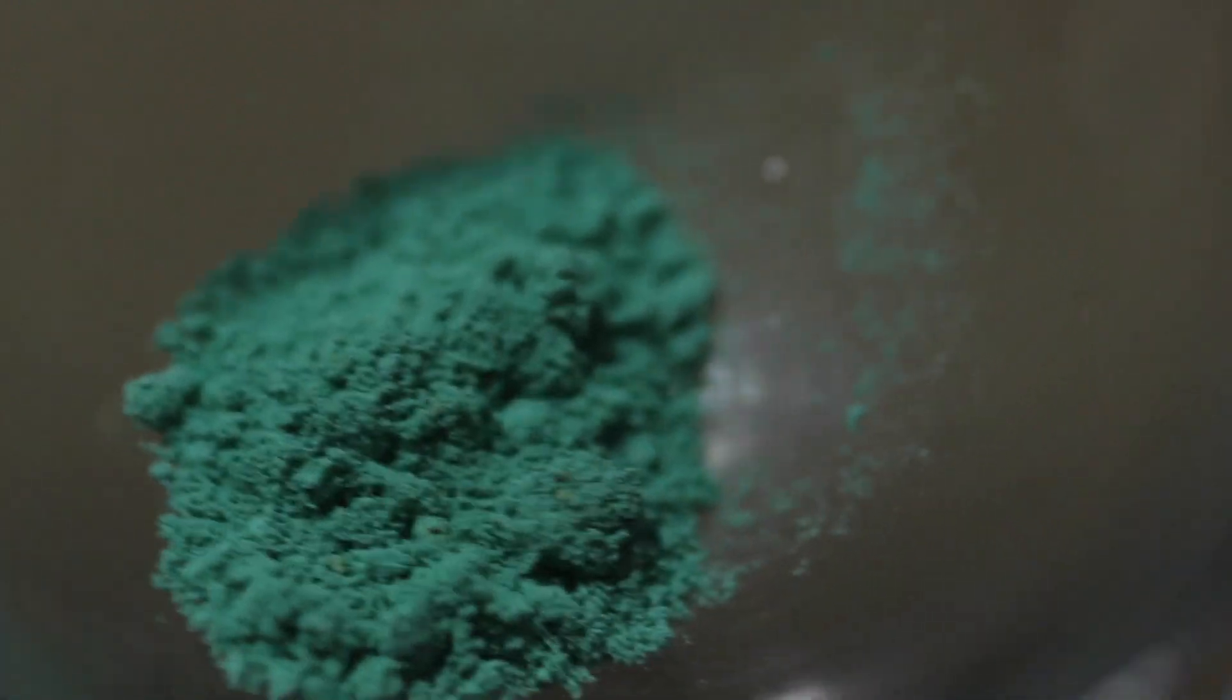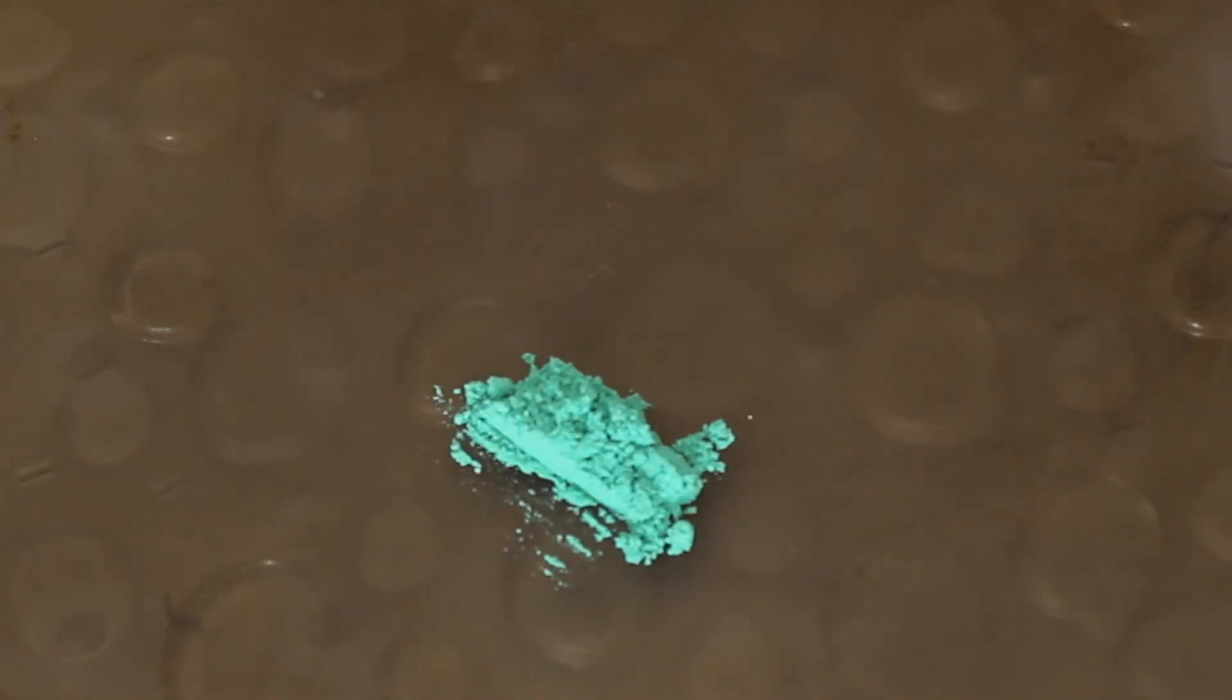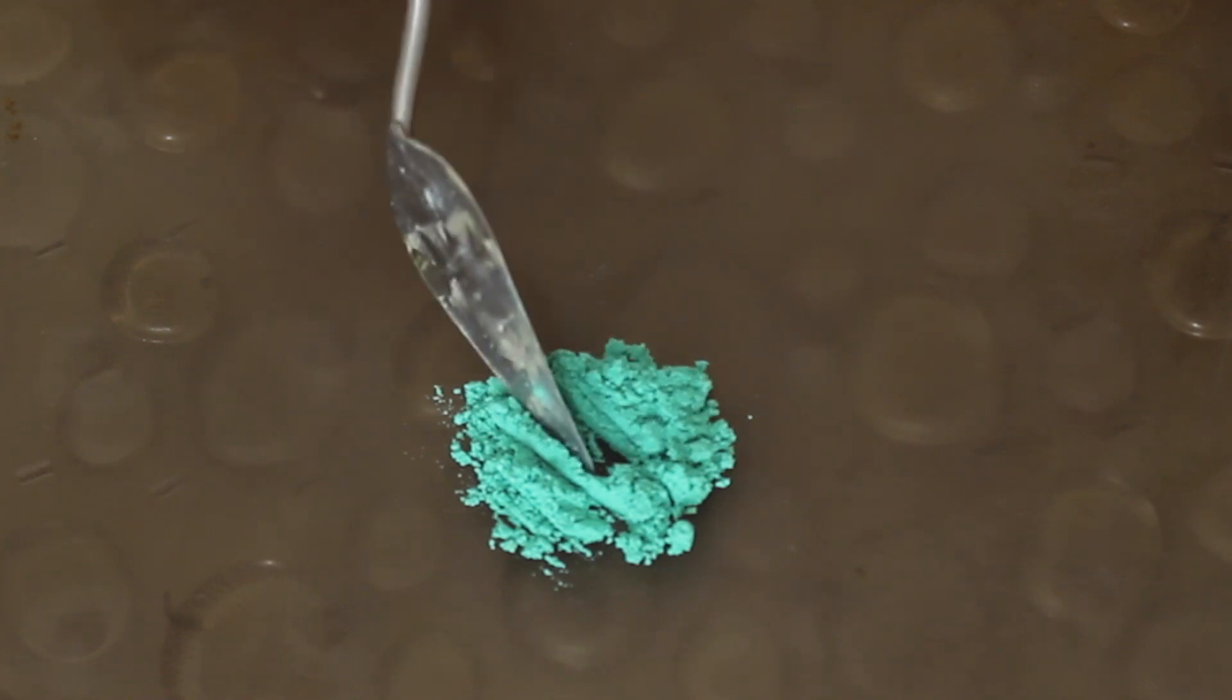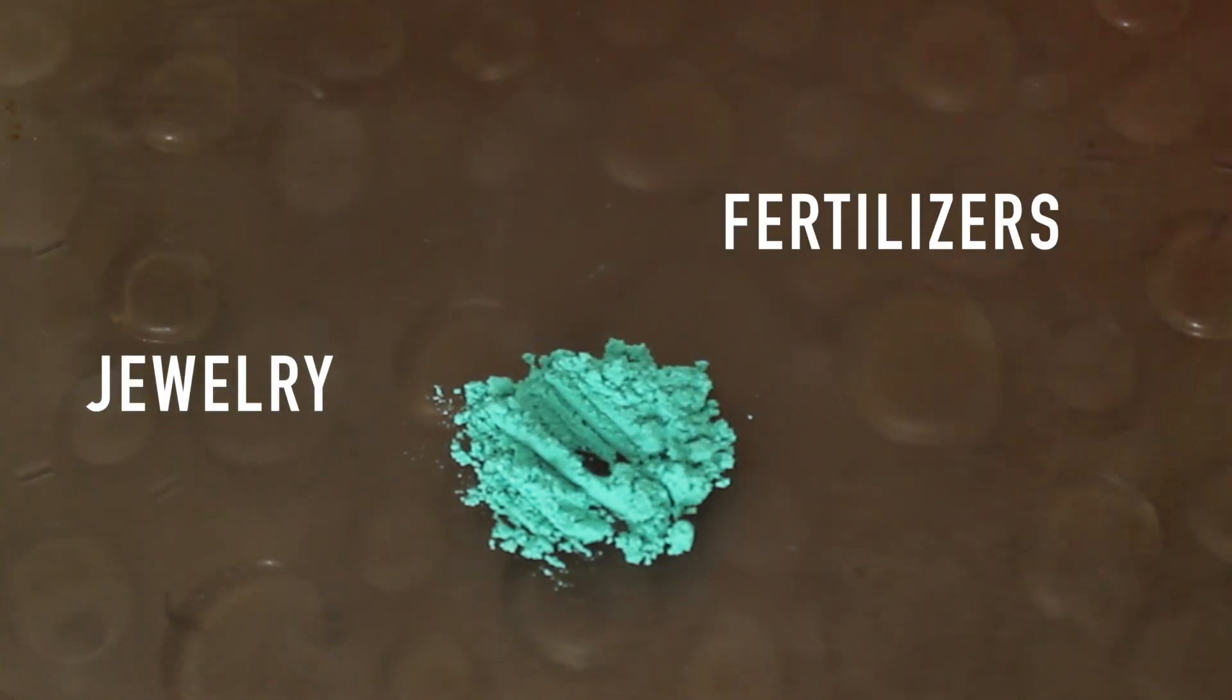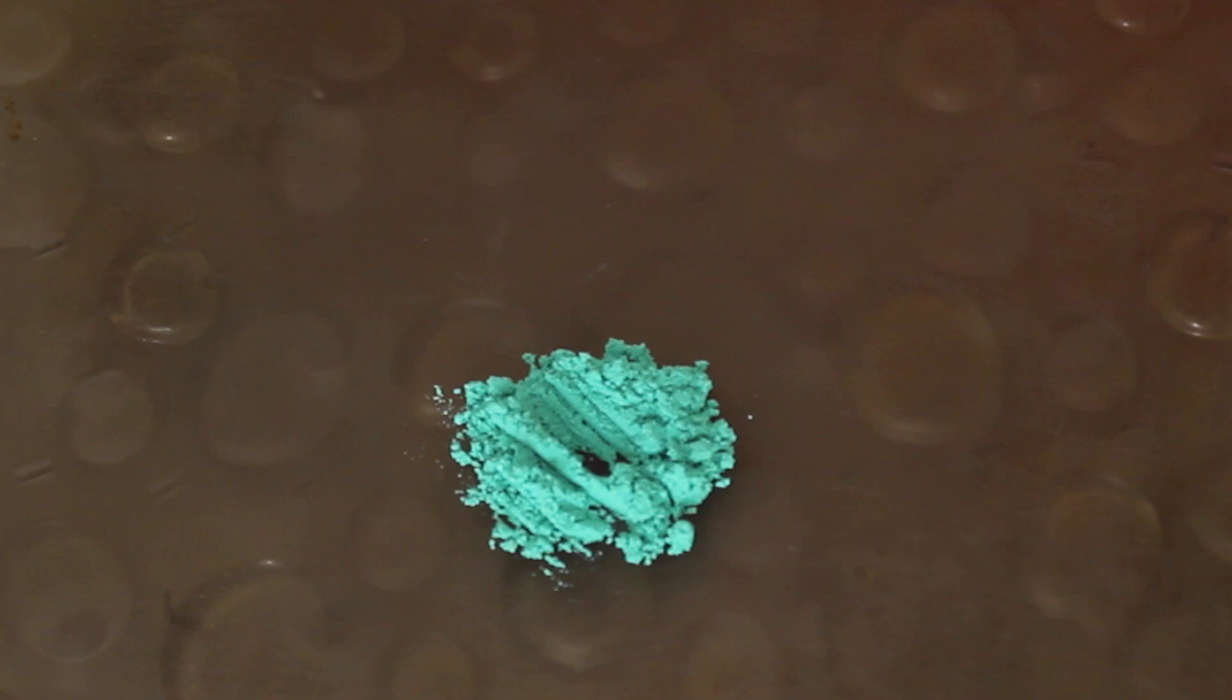I got my copper carbonate from a ceramic store that sells glazes and slips and it was really cheap, at least where I live, so I'm excited to see how good of a paint this turns out to be. It's used in so many things ranging from jewelry, fertilizers, fireworks, to paints and glaze, so it shouldn't be too difficult to find it wherever you are. I will also link to some in the description below.